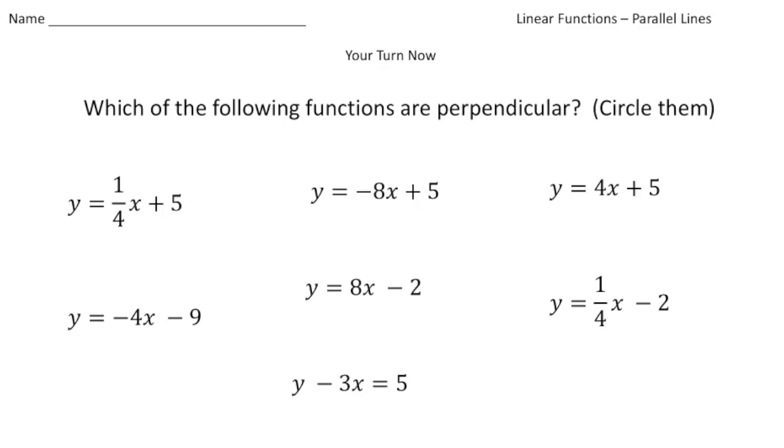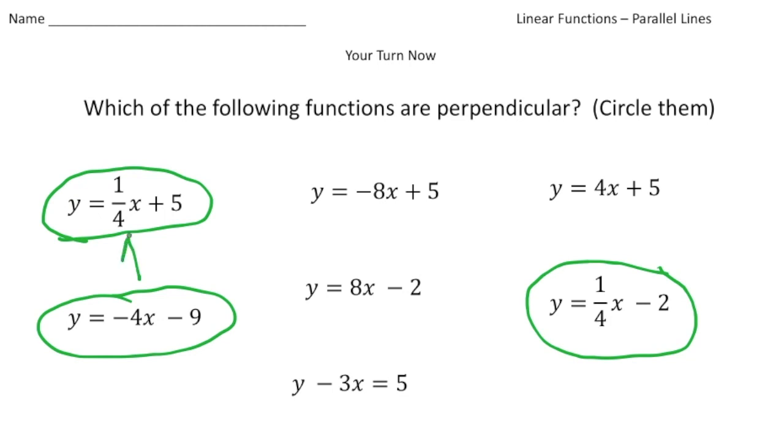Alright, welcome back. Let's see how you did. So what you had to do for this activity is which of the following functions are perpendicular. So again, we're looking for the slopes to have a product of negative one. And for this one, here I have a slope of negative four. And I know the reciprocal of negative four is negative one-fourth, but then it has to be the positive version of it, because we want to have a product of negative one. So it's going to be this function right here, but also this function right here as well. But this one could also be perpendicular with this one over here as well. So we have negative four x minus nine could be perpendicular with one-fourth x plus five, but it could also be perpendicular with one-fourth x minus two. Alright, how'd you do?